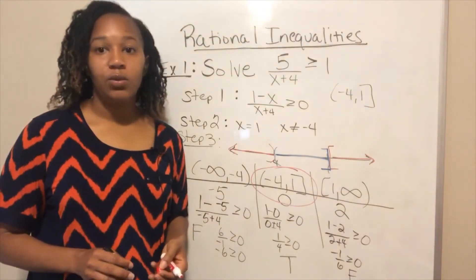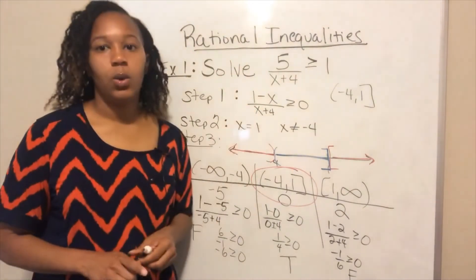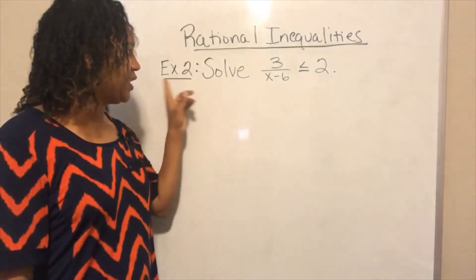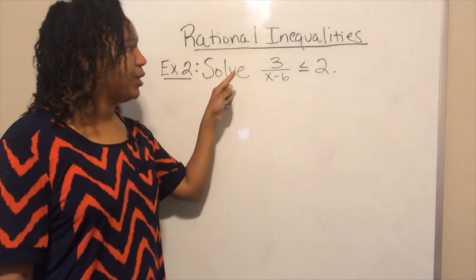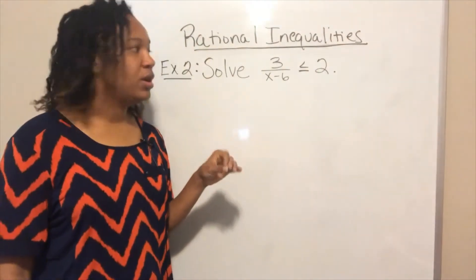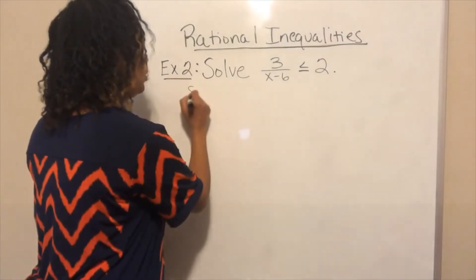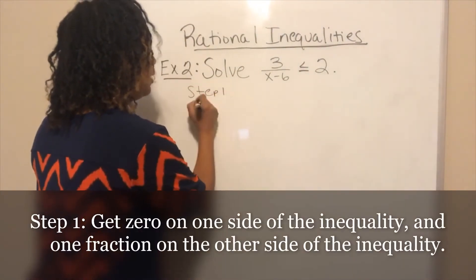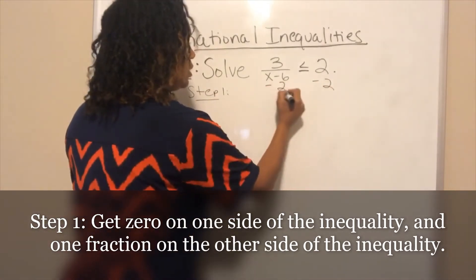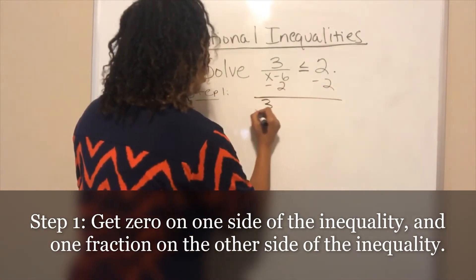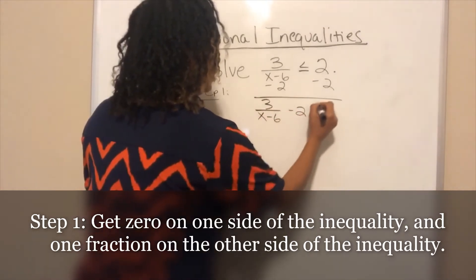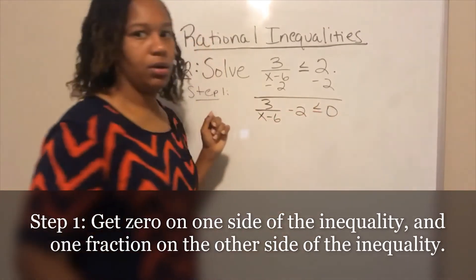So this is how you solve that rational inequality. For example two, we want to solve three over x minus six is less than or equal to two. Step one: get zero on one side by subtracting two from both sides. We get three over x minus six minus two, less than or equal to zero.